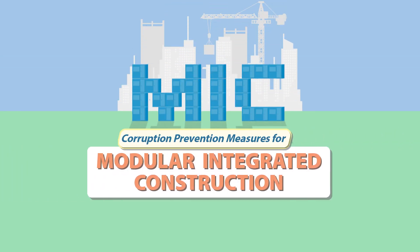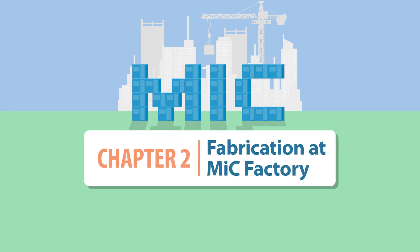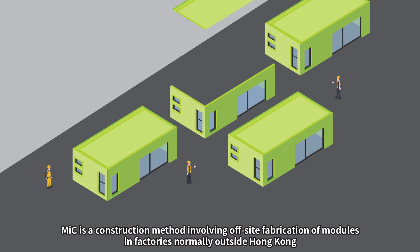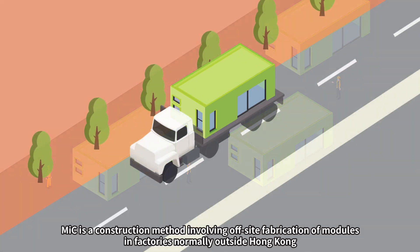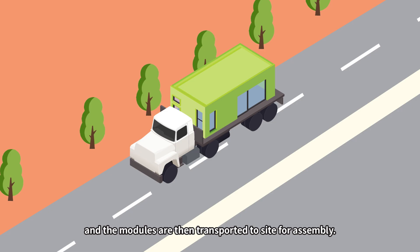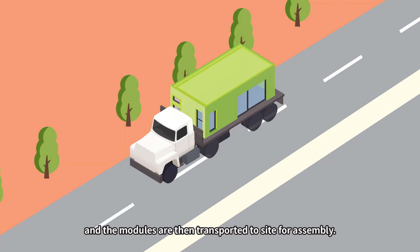Corruption Prevention Measures for Modular Integrated Construction, Chapter 2. MIC is a construction method involving off-site fabrication of modules in factories, normally outside Hong Kong, and the modules are then transported to site for assembly.